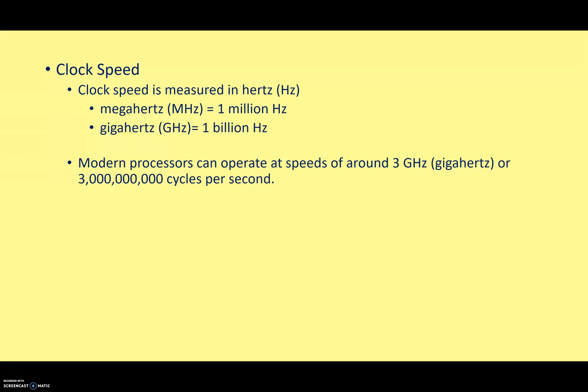Usually, we measure computer speed in gigahertz nowadays, which is a lot of these ticks every second. In fact, modern processors can operate at speeds of around three to four gigahertz. So you're looking at three to four billion cycles per second.